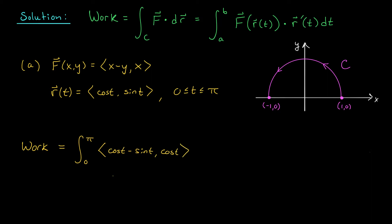And I have to take the dot product of this with the derivative of r(t). Okay, so maybe I'll write up here, the derivative of r(t) is going to be the vector function <-sin t, cos t>. And so I'm going to take the dot product with this vector here. We have <-sin t, cos t> dt.